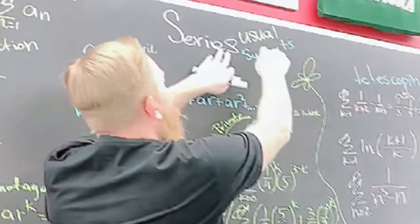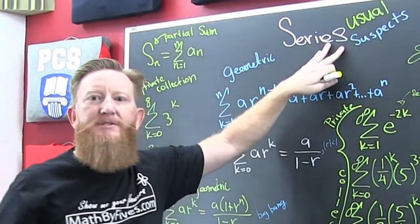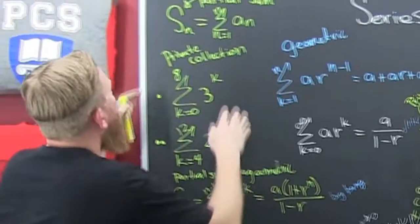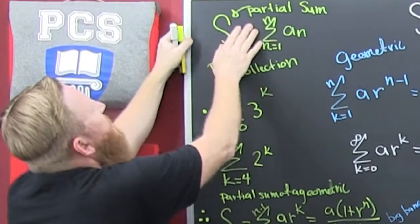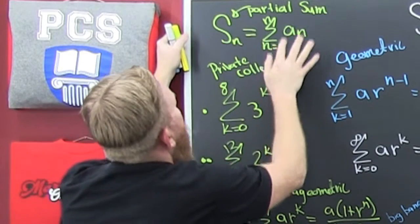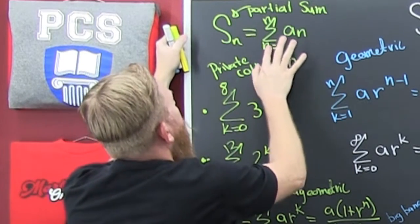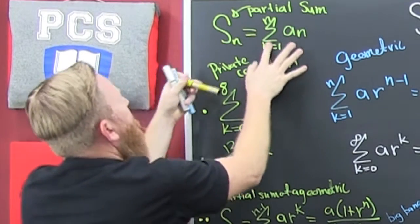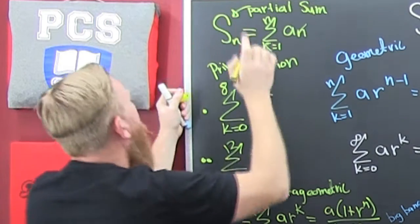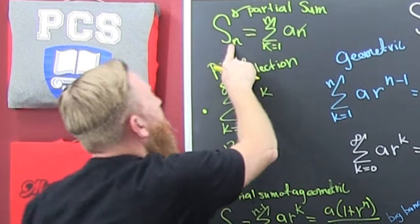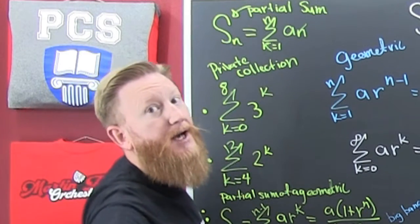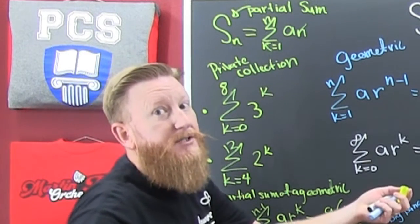We're talking about series and the usual suspects. Where should we start? Maybe up over here — the partial sum. What does that say? That says these should match. This needs to match this. What is that? That's the sum of the first n terms of a series. You probably got here because of the introduction to series. This is the series video on the usual suspects.